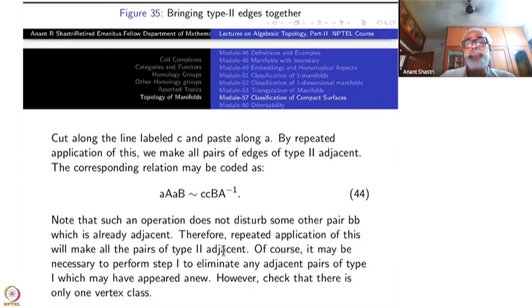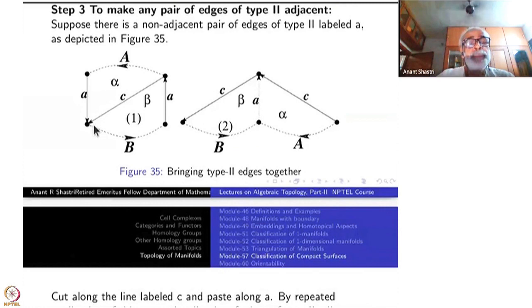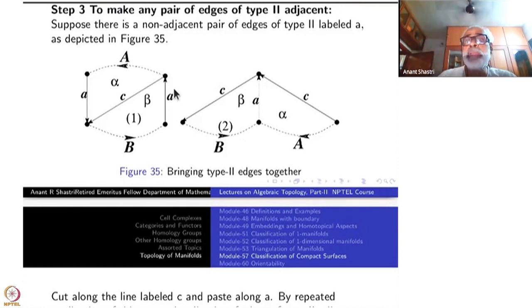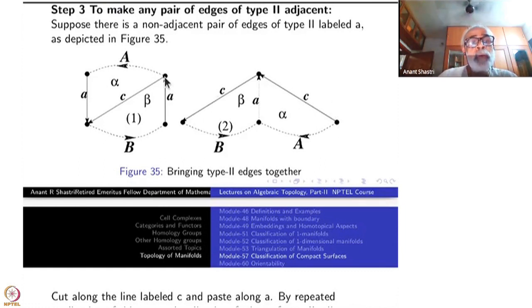The number of vertex classes will never increase. For example, all these vertices were in the same single class. When we cut here, the vertex at the end of one edge and beginning of another might seem to go into a different class, but it does not — the beginning of 'c' was that same point, so it stays in the same class. The end of 'a' and the end of 'a' have already come together, so only one vertex class remains in the new polygon as well.